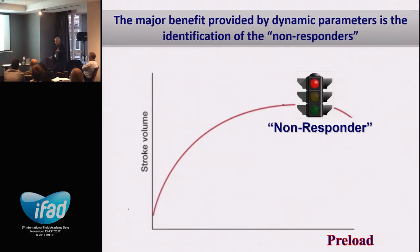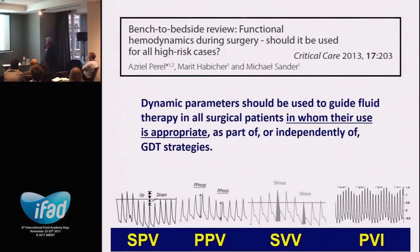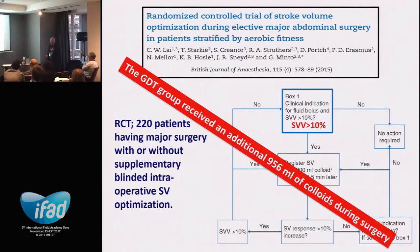Similarly, a paper using stroke volume variation protocol showed that using SVV guidance results in giving less fluid. The major advantage of dynamic parameters is identifying non-responders and withholding unnecessary fluid. Together with colleagues from the Charité in Berlin, we wrote that dynamic parameters should be used to guide fluid therapy in all surgical patients where their use is appropriate, as part of or independent from a goal-directed therapy protocol.